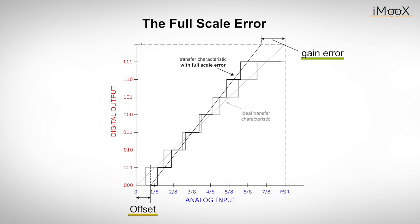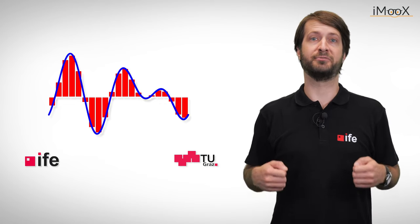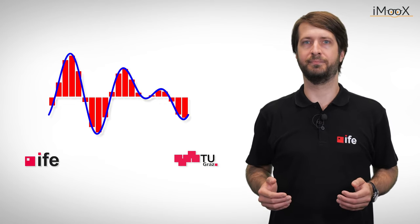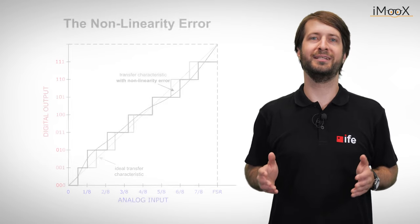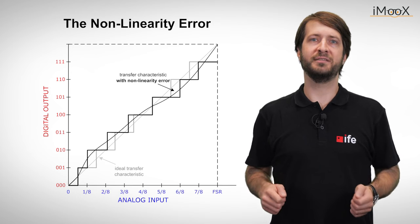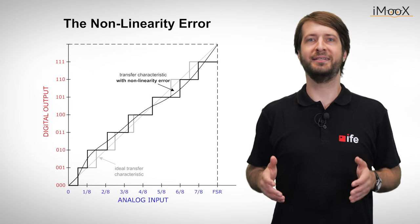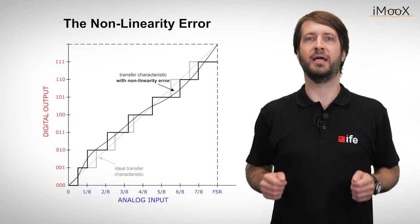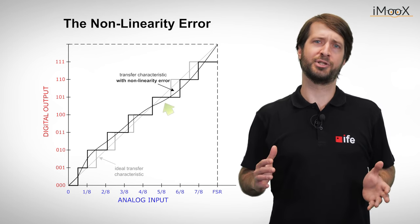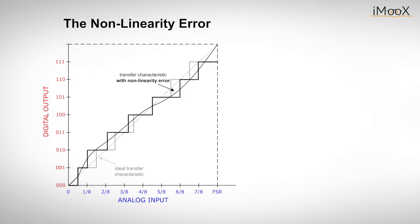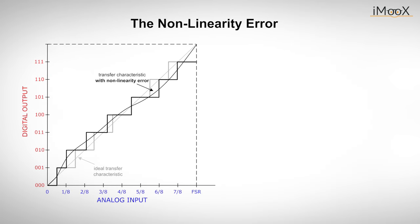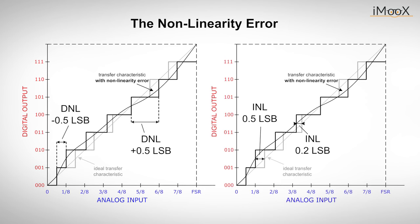Both gain and offset error are constant errors and can be eliminated by appropriate calibration. However, there are also types of errors that cannot be easily eliminated — so-called non-linearity errors. If offset and gain error are compensated so that the endpoints of the real and ideal characteristic are the same, a non-linearity error can be recognized by a curvature of the transfer curve. There are two kinds of non-linearity errors: the differential and the integral non-linearity, DNL and INL for short.